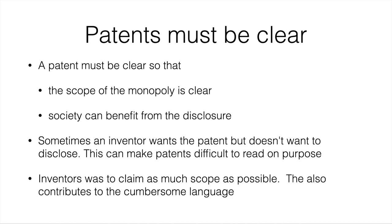To that end, patents must be clear. The inventor must actually disclose the invention fully in order to get the patent, otherwise society isn't getting anything in exchange. A patent must be clear so that the scope of the monopoly is clear, but also so that society can benefit from the disclosure. We need to know what the boundaries of the right are, and also how the invention works. I can't get a patent on my new way of making beer that uses less water unless I tell you how to do it — if I don't fully disclose the process so that anyone competent in beer-making can exploit it, I don't get the patent.